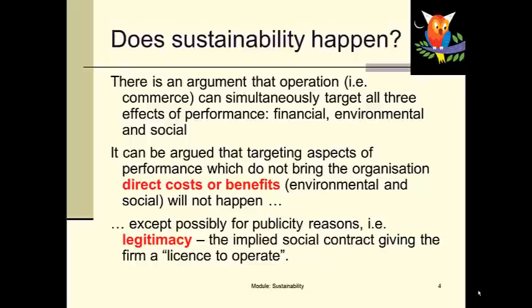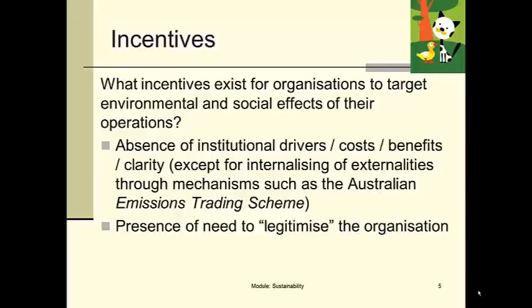Legitimacy can be that sort of direct link, or it can be a vaguer, almost advertising or public relations link. As a general rule, many organisations don't have clear incentives to target the environmental and social effects of their operations. The Australian Emissions Trading Scheme was a way of trying to say: pollution is important to us, let's make organisations face the cost of pollution, and therefore because pollution is directly entering into the profit measure, managers will directly see an incentive for targeting that environmental outcome.